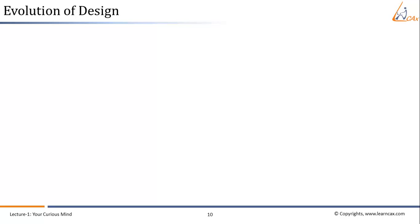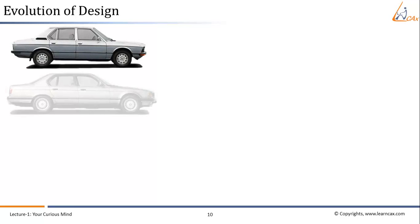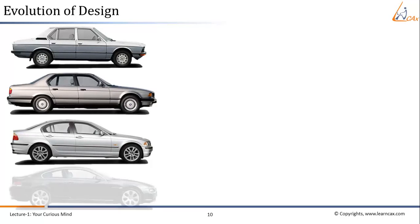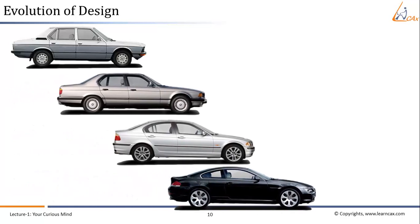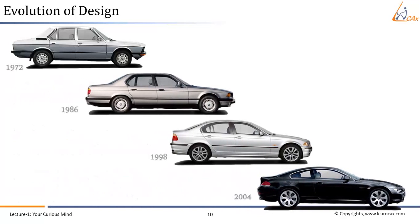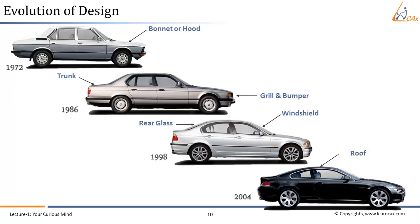Let us pick some cars from different timelines and analyze their design profile in detail. But before that, let's find out which components define the external shape of the car. These include the bonnet or hood, windshield, rear glass, roof, and trunk. Now we will move back to our car body design analysis.